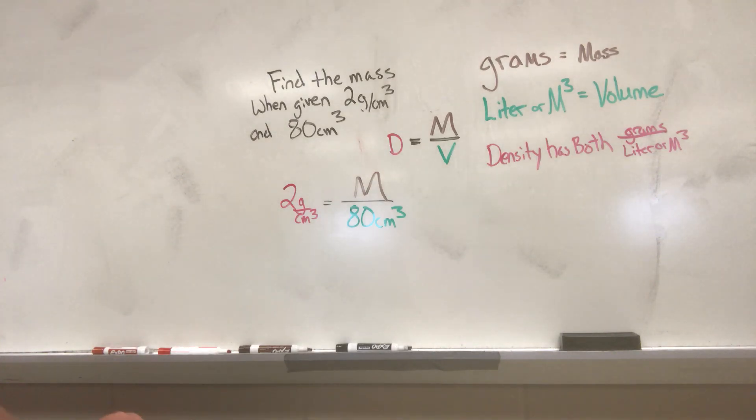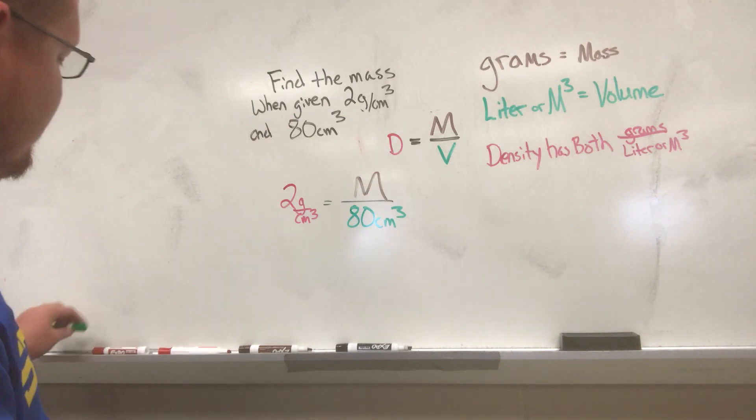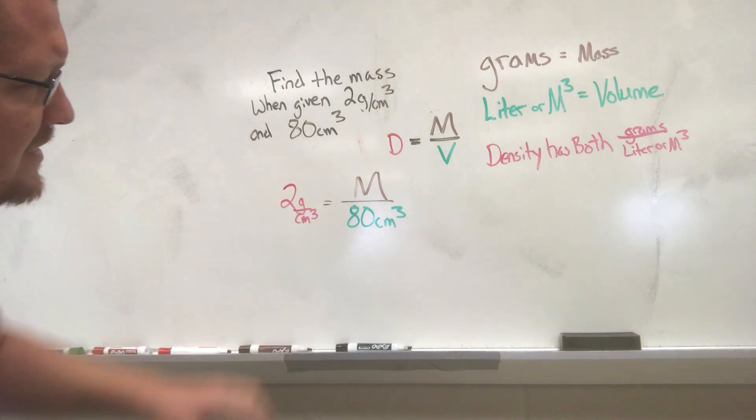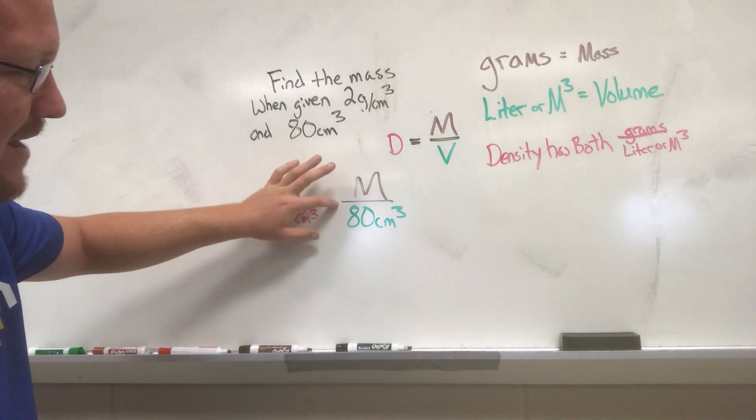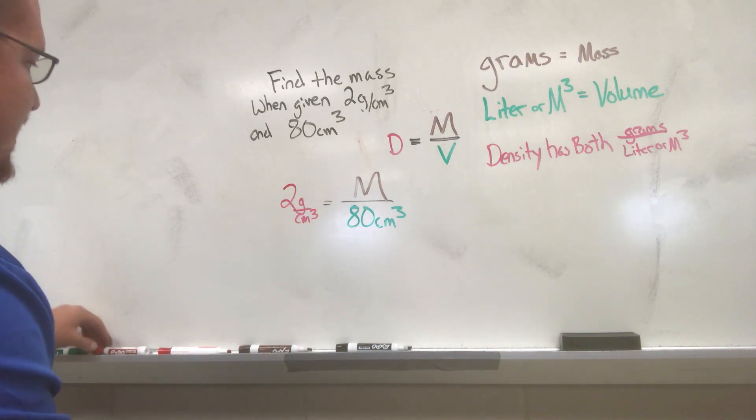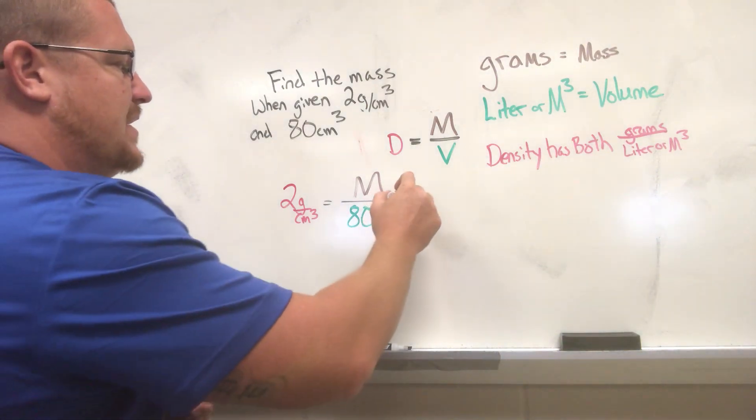All right, now we must solve for M. So we must get the variable on the side by itself. To do that we need to do the opposite action of what is there. So this is M divided by 80, so we will do the opposite of that and we will multiply both sides by 80.